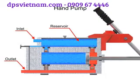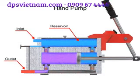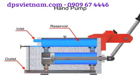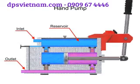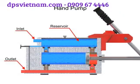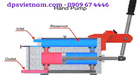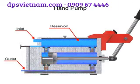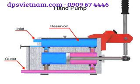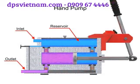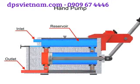Double acting hand pumps are more efficient, allowing fluid to both enter and discharge on both strokes of the piston. Moving the pump handle in either direction allows fluid to be drawn in from the reservoir and discharged via the outlet ports. Check valves in all locations prevent fluid backflow.